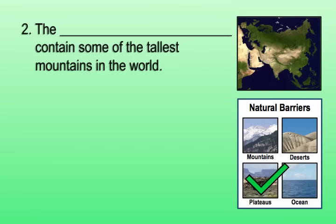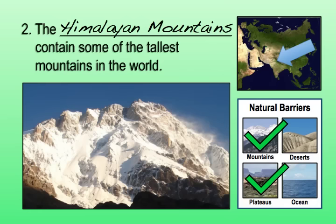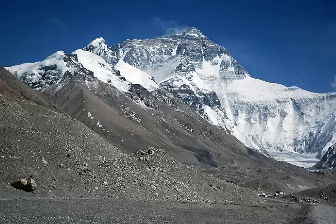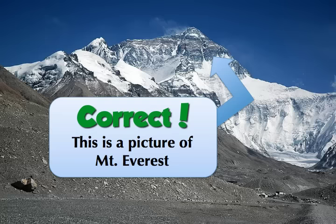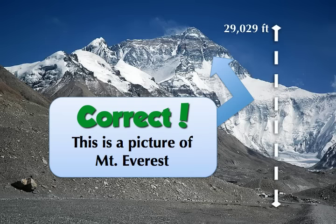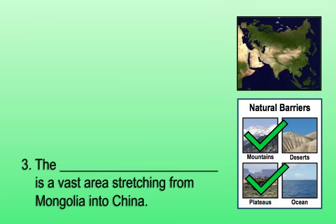We also see the Himalayan mountains forming part of the natural border of China. When we're talking about the Himalayan mountains, you've got to remember that that is the largest mountain range in the world. Take a look at a photo here of one of these particular mountains. Do you have an idea of exactly what mountain we must be looking at? That's right — that is a picture of Mount Everest, all 29,000 plus feet of it. So that gives you a good idea of exactly how challenging it would be to try to enter China by crossing over the Himalayan mountains.